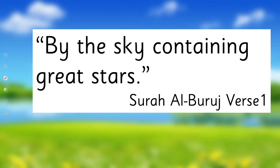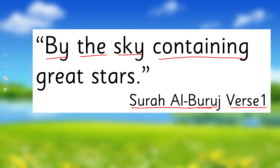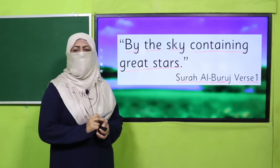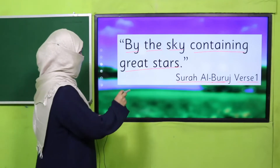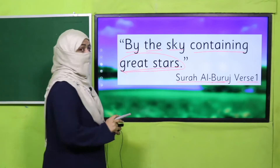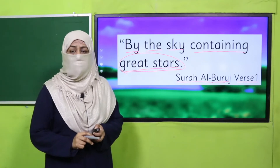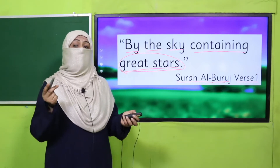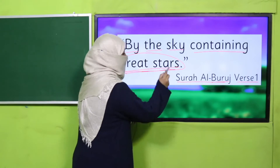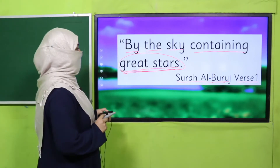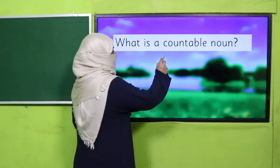We start with the name of Allah. Allah mentions in Surah Al-Buruj, verse 1: 'By the sky containing great stars.' This small verse is telling us a lot — great stars means a huge number of stars. Can we count stars? No, we cannot. So anything which we cannot count is called uncountable.